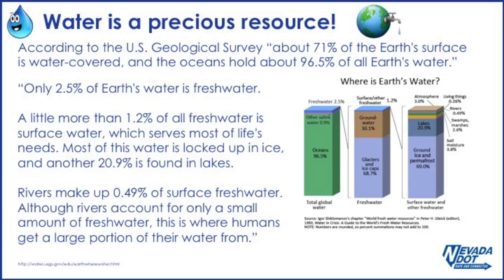Most of this water is locked up in ice, and another 20.9% is found in lakes. Rivers make up 0.49% of surface freshwater. Although rivers account for only a small amount of freshwater, this is where humans get a large portion of their water from.